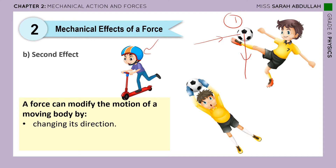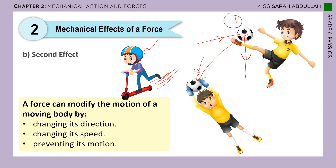Second case: a boy is already moving on his scooter and goes faster, changing his speed. So a force can also modify motion by changing its speed. Third case: a ball is kicked to a goalkeeper who catches it — the ball is no longer moving. So a force can also stop motion, preventing the body from continuing. These are the three ways a force can modify the motion of a moving body.